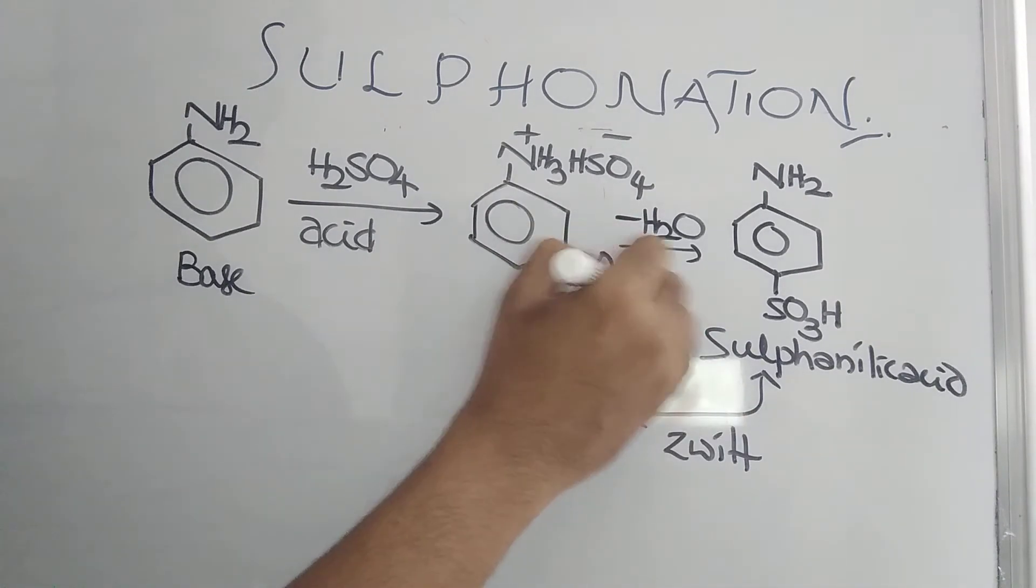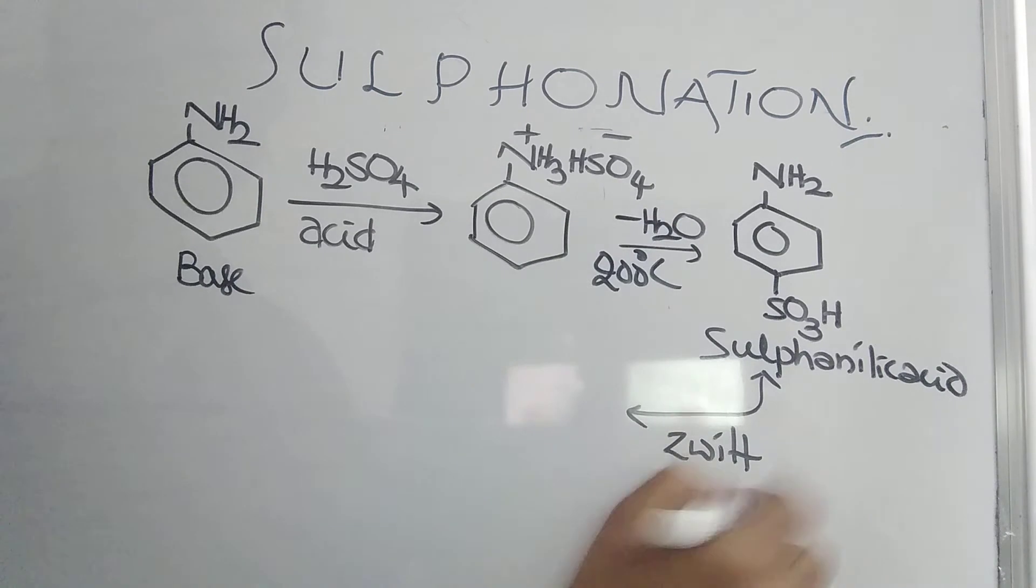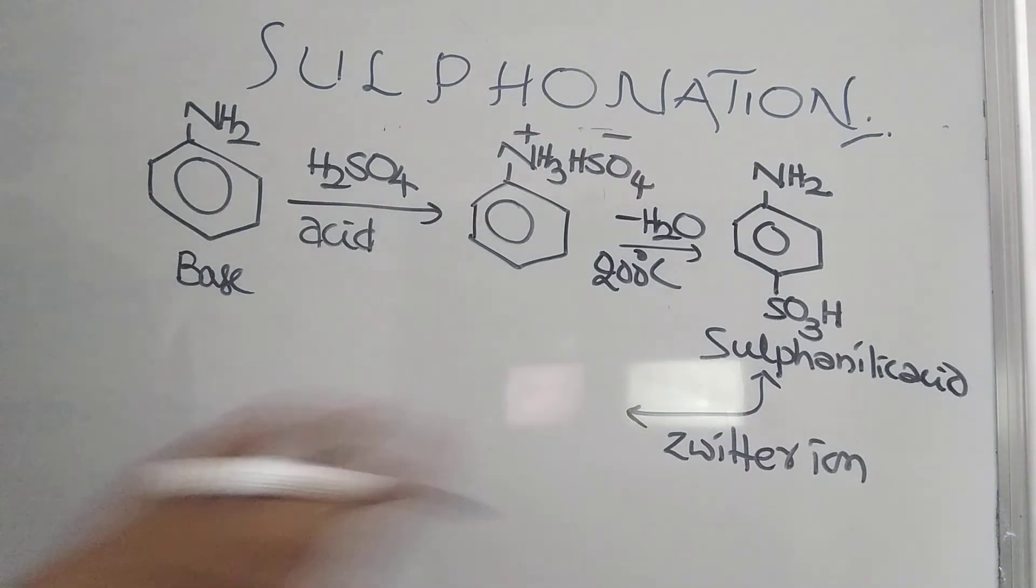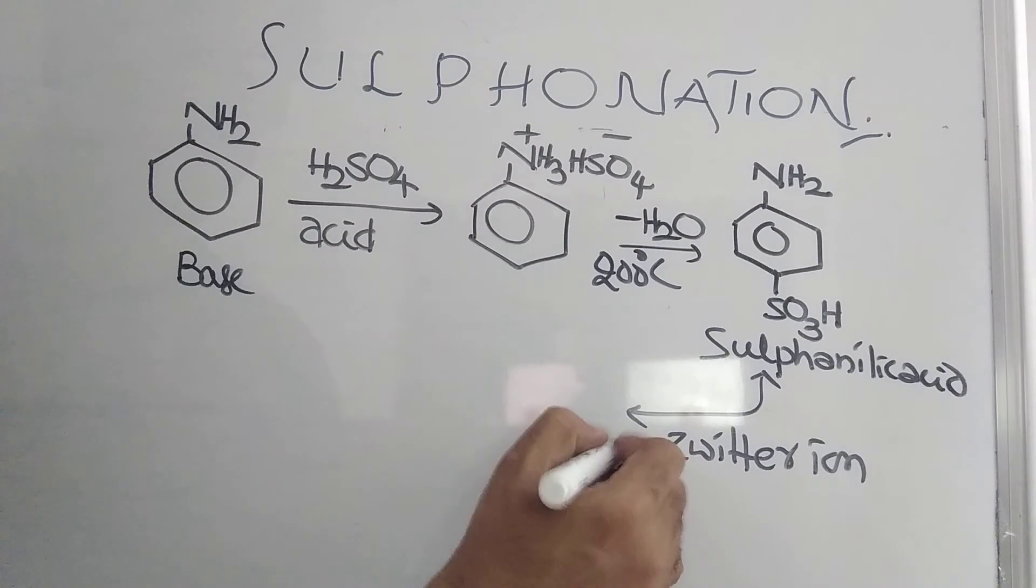This generally happens after 200 degree Celsius. You need to heat. Zwitterion means zwitterion form. It will change. The proton will be shifting. This form is called zwitterion.